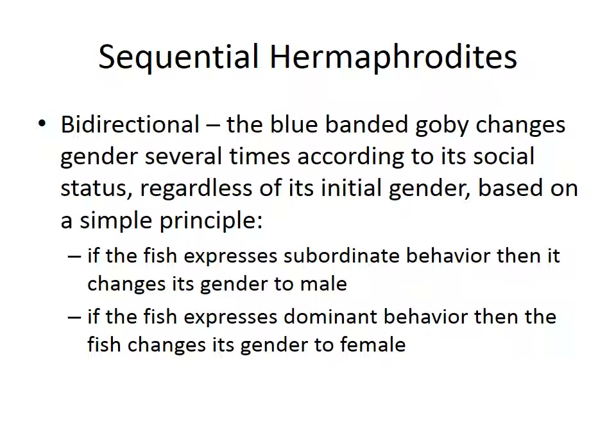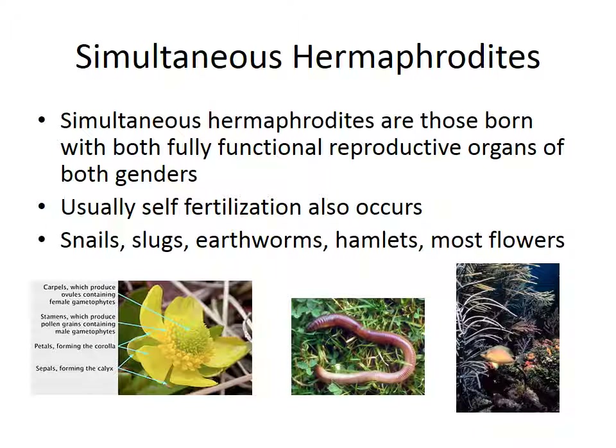In bidirectional hermaphrodites like the blue-banded goby, gender changes several times according to social status regardless of initial gender, based on a simple principle: if the fish expresses subordinate behavior, it changes its gender to male. These are all fishes that live in colonies. If the fish expresses dominant behavior, it changes its gender to female. This happens quite frequently in this colony.